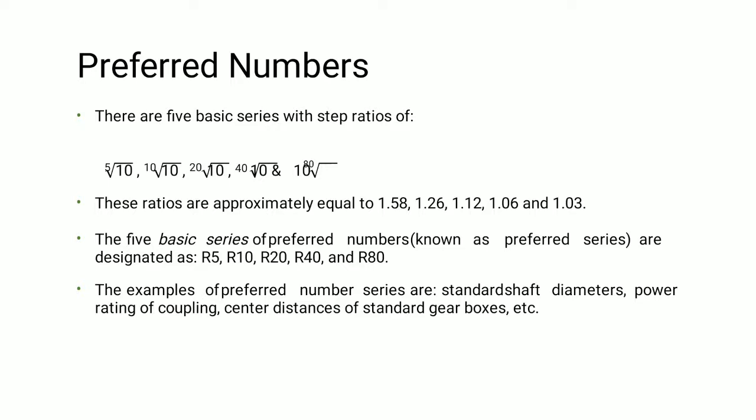We can call these series R5, R10, R20, R40, and R80. If you calculate the values from R5 to R80, you can see their mathematical formulas, indicated as the 5th root of 10, 10th root of 10, 20th root of 10, and so on. The calculated values lie between 1.58 and 1.03.